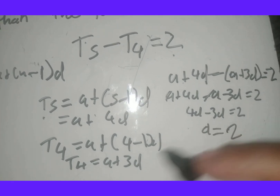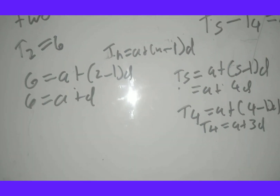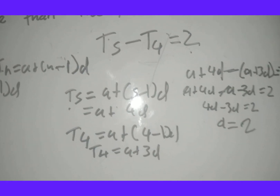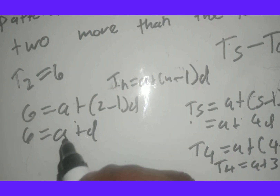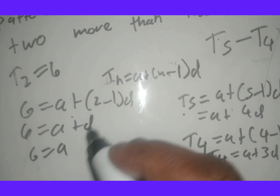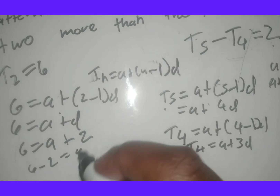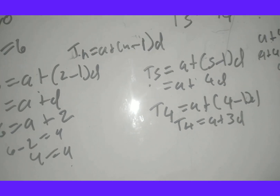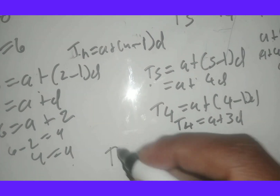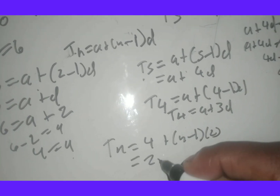In some cases the second condition simplifies to give d directly; in others we need to solve two equations simultaneously as usual. Since d equals 2, substituting into 6 equals a plus d gives a equals 6 minus 2 equals 4. So again, a equals 4 and d equals 2, and tn equals 2n plus 2.